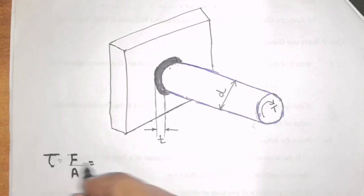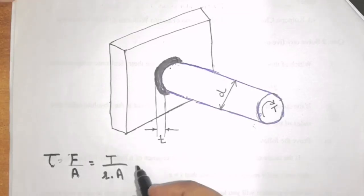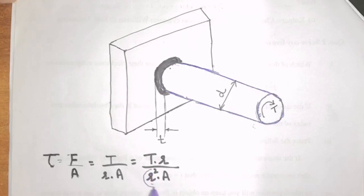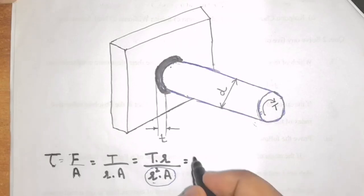So I will get here, in place of F, I will write T divided by R, that is torque divided by R multiplied by area. Multiplying and dividing by R, I will get T multiplied by R divided by R square into A. This term R square into A is the second moment of area or we can also say it as polar moment of inertia. So, replacing this R square into A by polar moment of inertia that is J, I will get tau is equal to T into R divided by J.